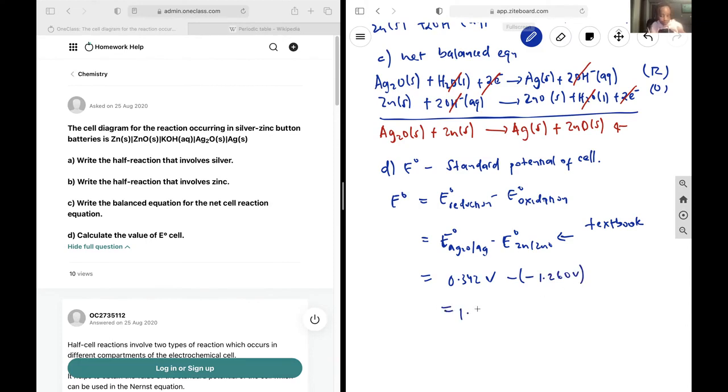And so those two add up. So you're going to get 1.602 volts as the standard potential of the cell. And that's it.